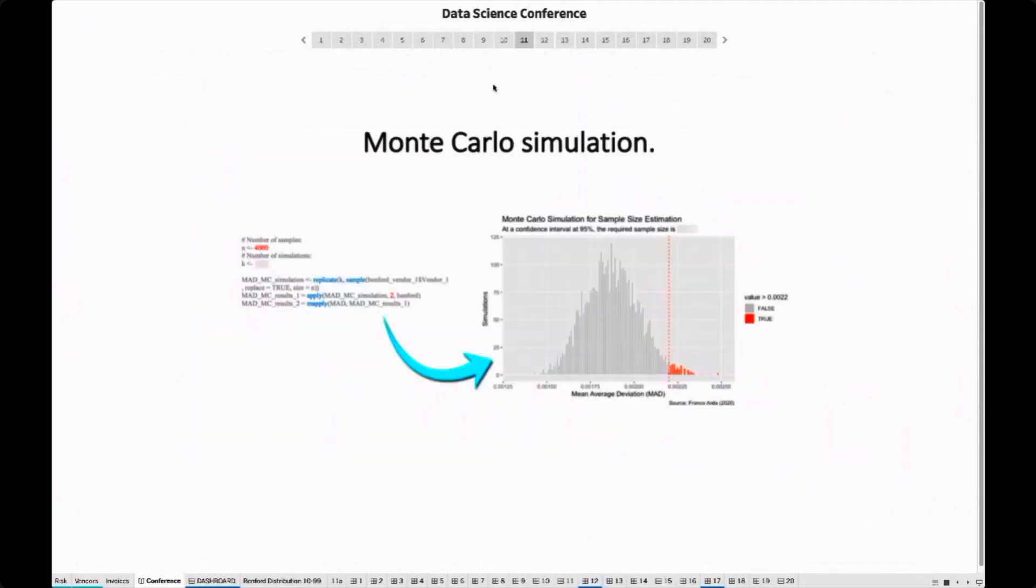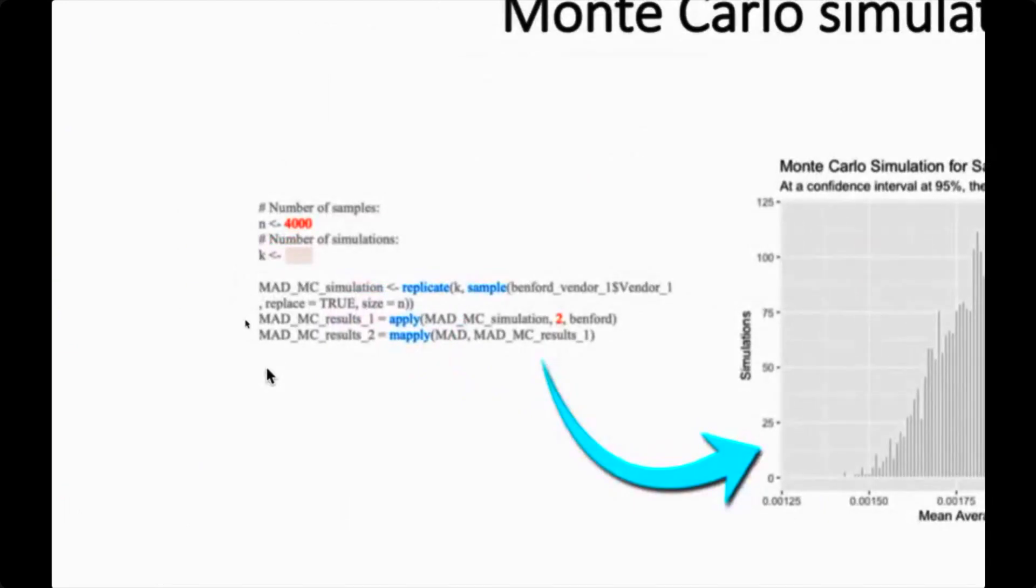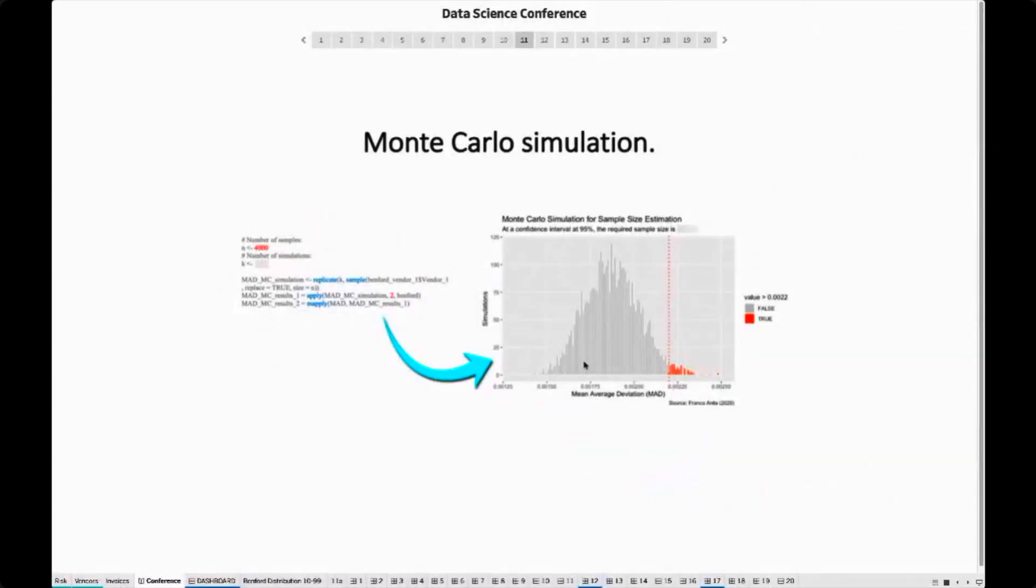Now, one of my favorite topics is the Monte Carlo simulation. The Monte Carlo algorithm is basically one of the most influential algorithms of the 20th century. The algorithm is used in many fields such as physics, engineering, finance, and in our case, statistics. The Monte Carlo simulation helps us to determine the sample size at a given confidence level. For example, how many samples do we need to be 95% confident that the sample size is sufficient? This is what we're trying to accomplish here with the R code snippet. On the right, we can see visually the results of a Monte Carlo simulation. The part in gray covers the 95% and the part in red covers the remaining 5%.